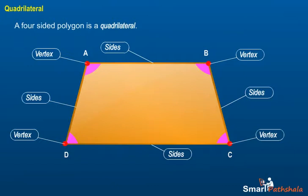In any quadrilateral ABCD, adjacent sides are AB and BC, BC and CD, CD and DA, and DA and AB. Opposite sides are AB and DC, and BC and AD.